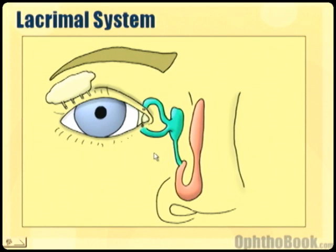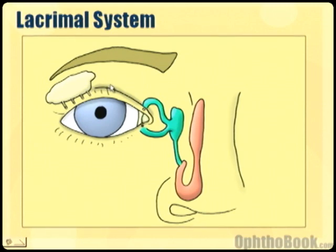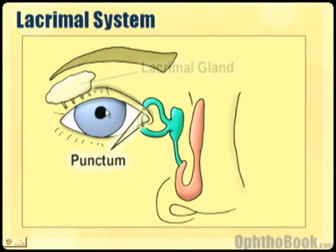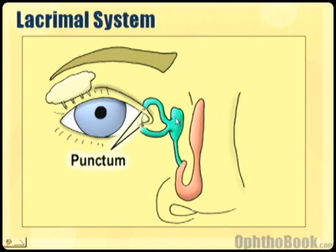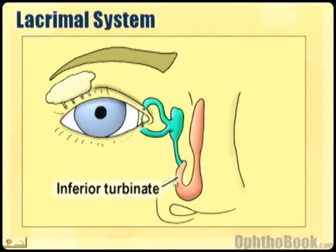The lacrimal system controls the tears and the tear drainage. The majority of tears are actually produced by accessory glands up in the fornix. But a lot of our reflex tearing is produced by the lacrimal gland up here in the corner, which squirts tears into the tear film. The tears are then drained out through small punctum, down a canalicular system into a sac, then down a nasolacrimal duct, where it drains into the inferior meatus, which is underneath the inferior turbinate.